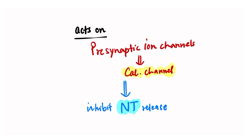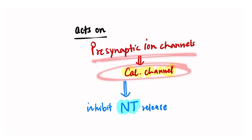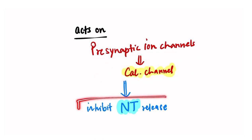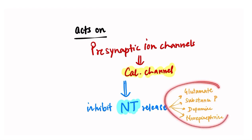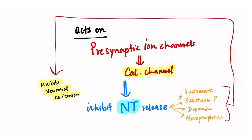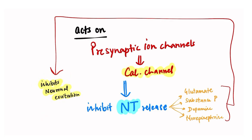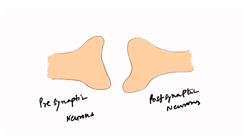So now let us see the actual mechanism of action of this drug. It acts on presynaptic ion channels, that is calcium channels, and by acting on calcium channels it inhibits the release of neurotransmitters like glutamate, substance P, dopamine, and norepinephrine. Overall, pregabalin inhibits neuronal excitation.